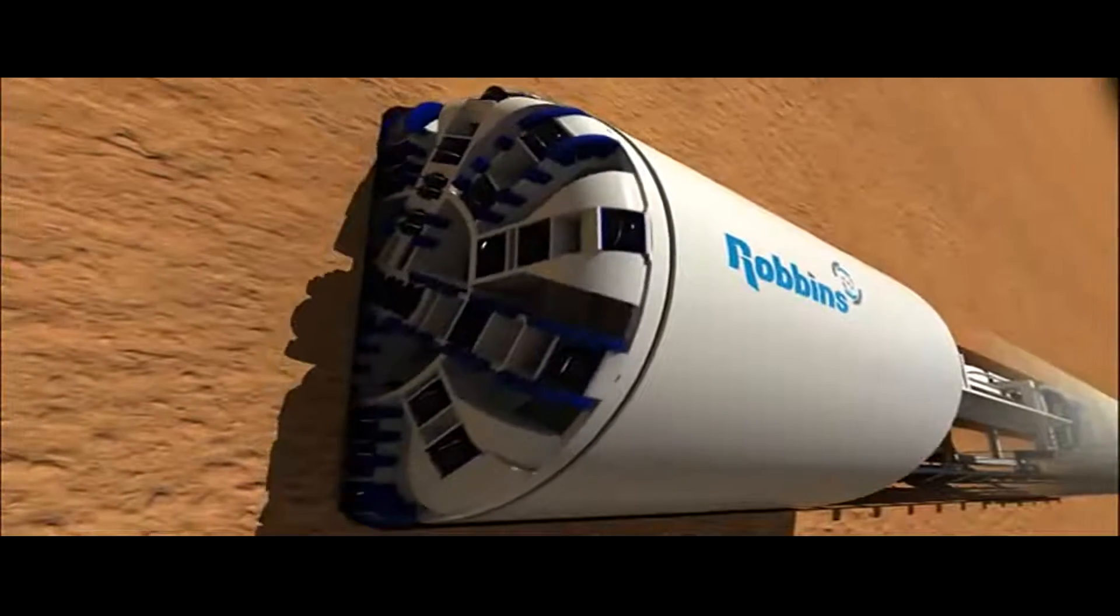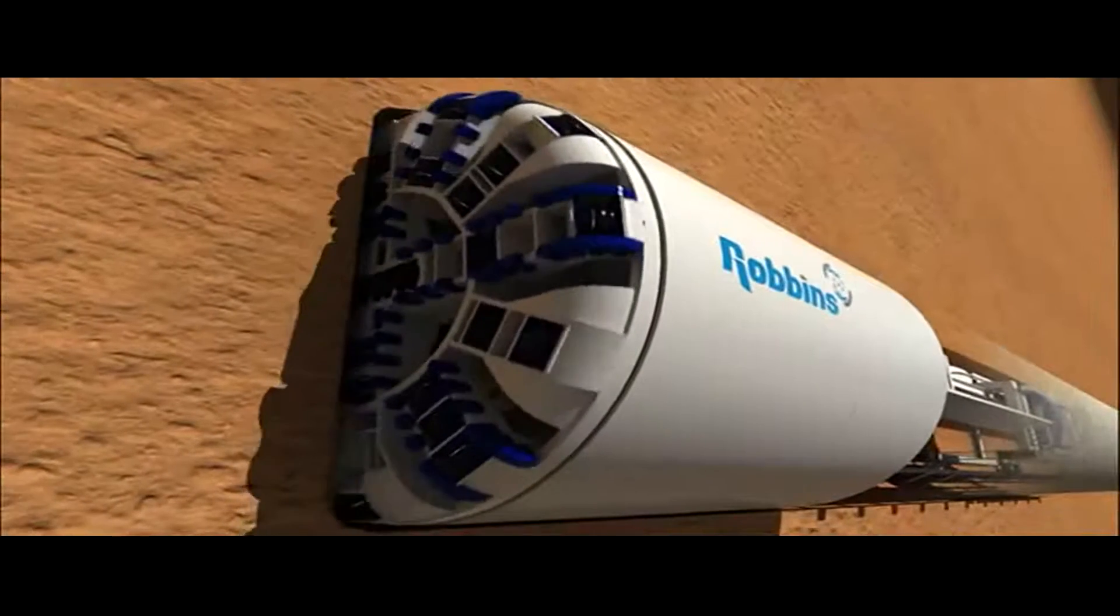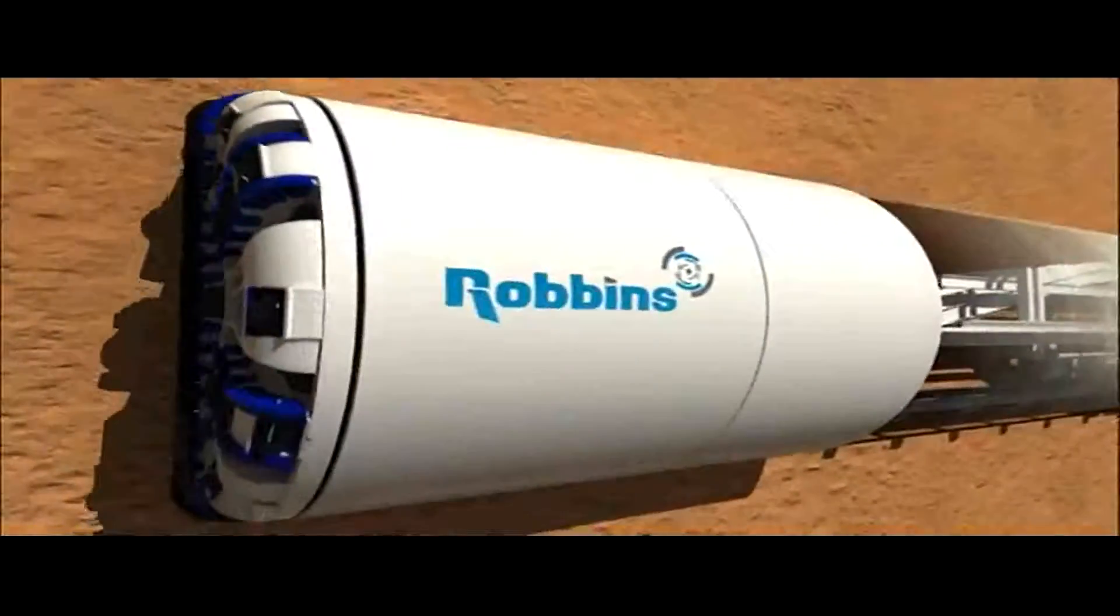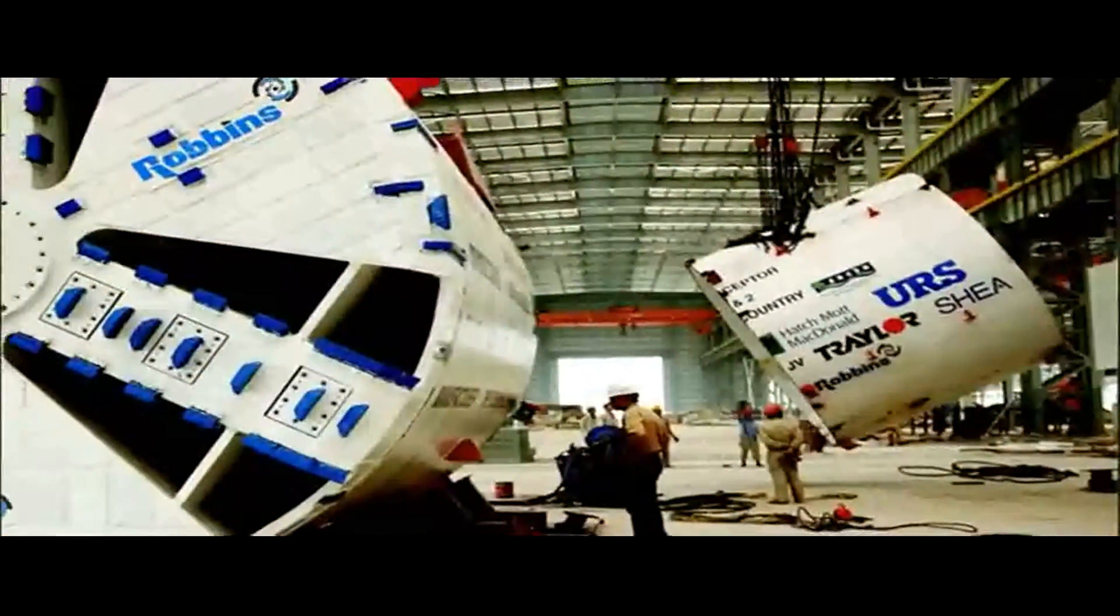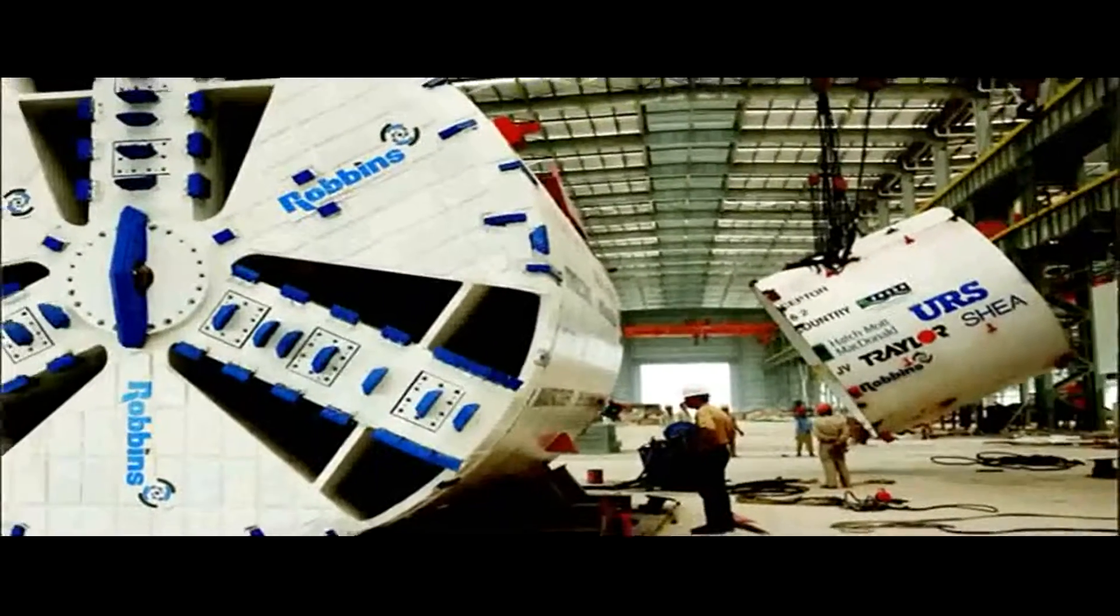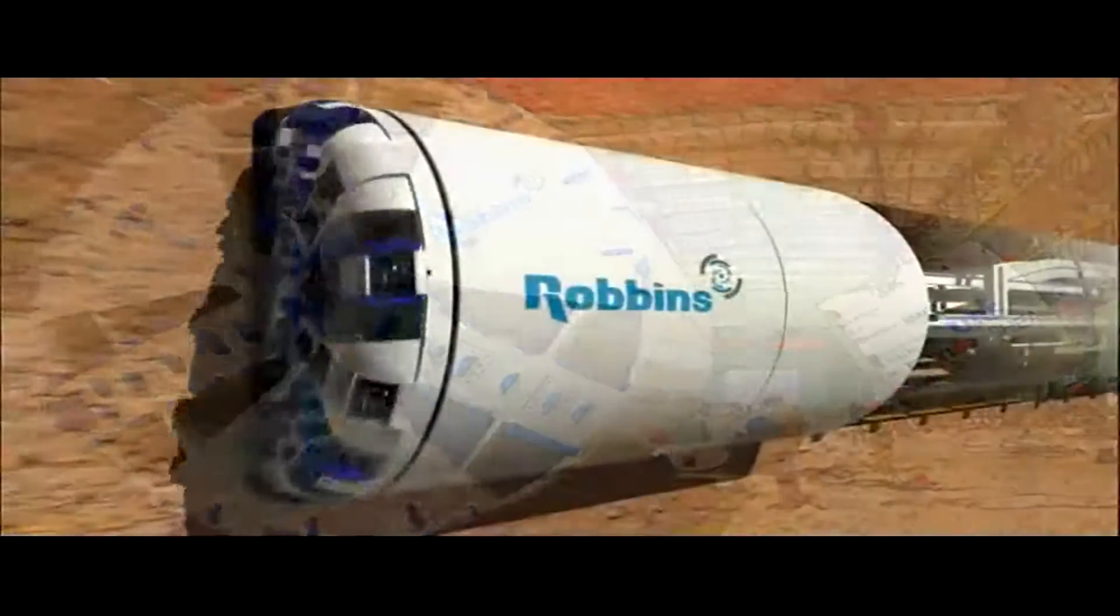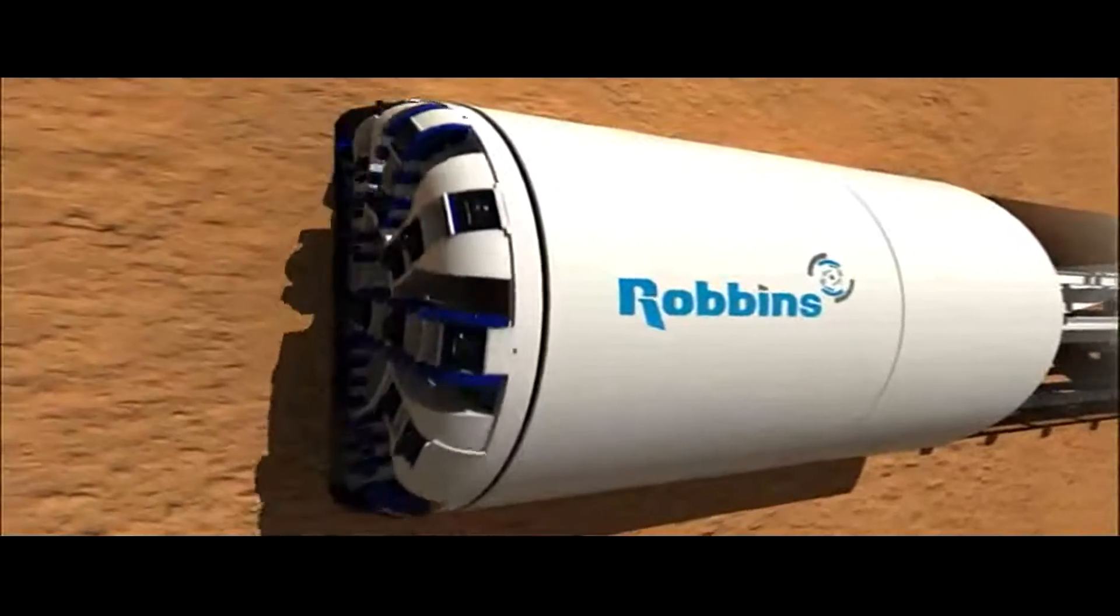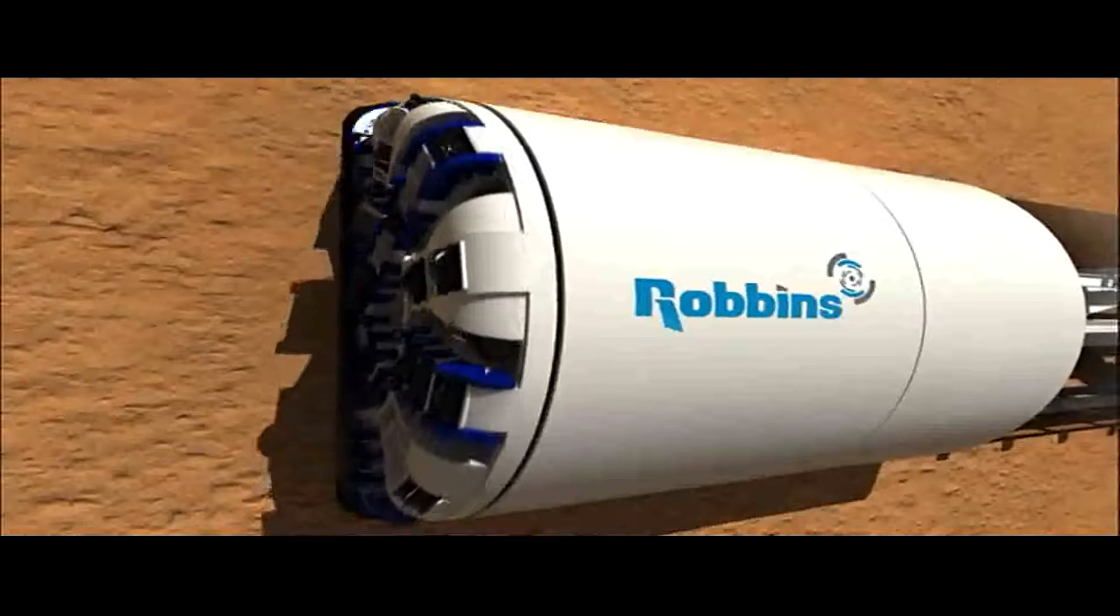Robbins provides earth pressure balance machines known as EPBs for projects around the world. Every Robbins EPB is customized to a project's unique requirements, including ground conditions, tunnel alignment, and project location. This video explains how a typical Robbins EPB excavates in soft ground and why they are the tool of choice for contractors worldwide.